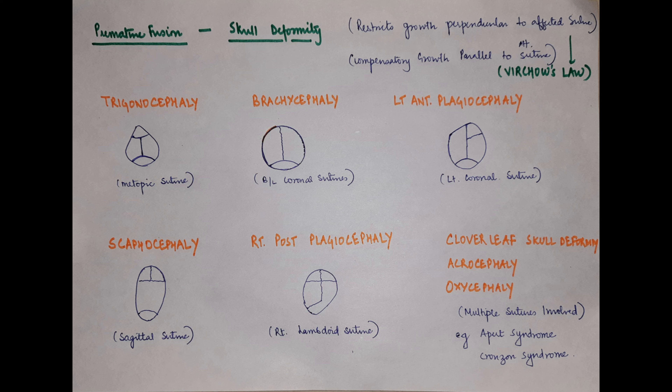If there is fusion of both sides of the coronal suture, we will get brachycephaly. If there is fusion of one-sided coronal suture, like the left coronal suture, it will lead to left anterior plagiocephaly. If there is early fusion of the sagittal suture, there will be a boat-shaped skull — we call it scaphocephaly. And if there is premature fusion of the right-sided lambdoid suture, there will be right-sided posterior plagiocephaly.